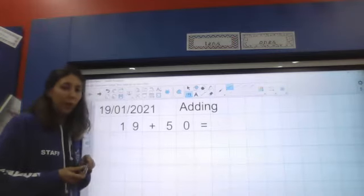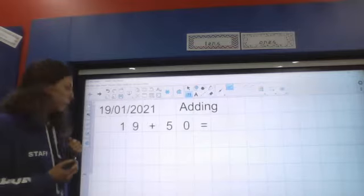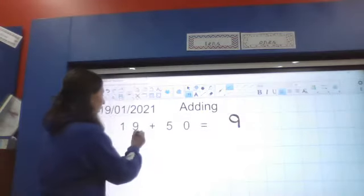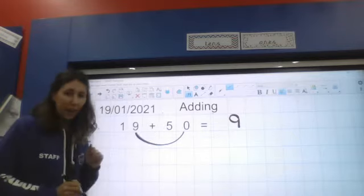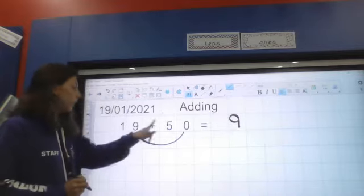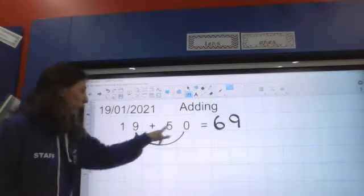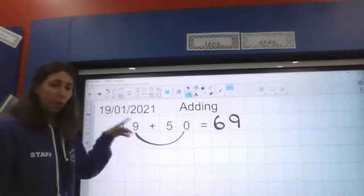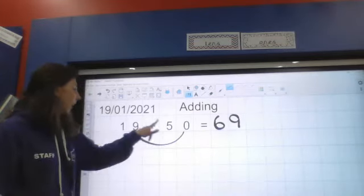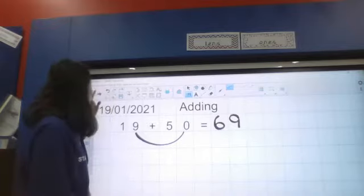So my answer to 19 add 50 would be 69. We can do it by drawing it out, drawing the tens, drawing the ones and then counting how many we've got at the end. Some of you might be able to look at that question and just be able to see how to work it out mentally without drawing them. What you might be able to see is that nine ones add zero ones is going to be nine ones. Then one add five in my tens place, or swap it round to make it easier. Five add one, remember it's better to put the bigger number in your head. Five tens add one ten is six tens.